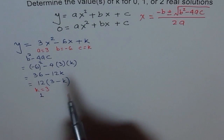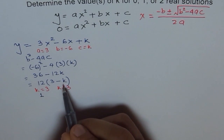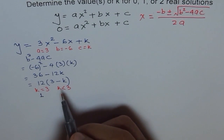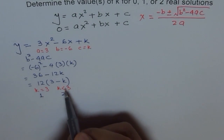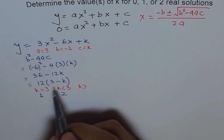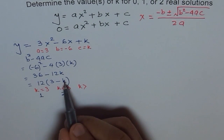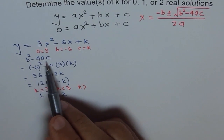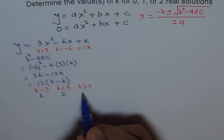If k is greater than 3 — test with k equals 4 — then 3 minus 4 is negative 1, and negative 1 times 12 is negative 12. Therefore b squared minus 4ac becomes negative, and if it is negative, the number of solutions is 0. So: k equals 3 gives one solution, k less than 3 gives two solutions, and k greater than 3 gives no solutions.